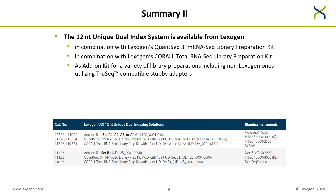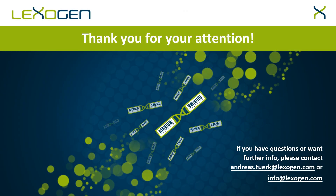Our barcodes are available as the 12 nucleotide unique dual index system from Lexogen, and can be used in combination with Lexogen's QuantSeq 3' mRNA-seq library prep kit and Lexogen's Corall Total RNA-seq library prep kit. In addition, they can be used as an add-on kit for a variety of library preps, including non-Lexogen ones that utilize TruSeq-compatible stubby adapters. Thank you for your attention — if you have any further questions, please address them to myself or to info@lexogen.com.